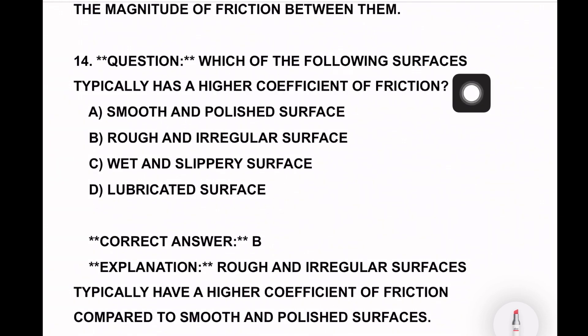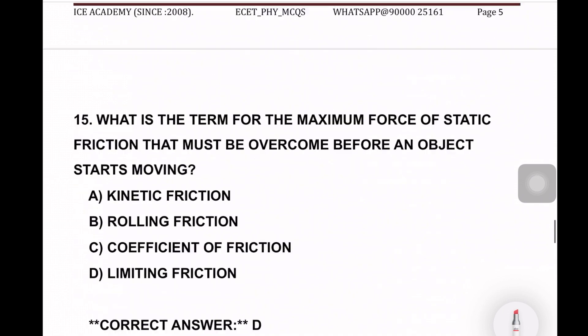Which of the following surfaces typically has a higher coefficient of friction? Smooth and polished surface, rough and irregular surface, wet and slippery surface, lubricated surface. So rough and irregular surface. Rough and irregular surfaces coefficient of friction at the economy.